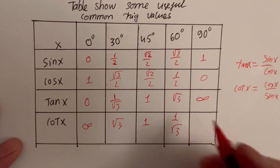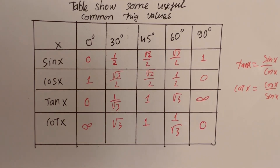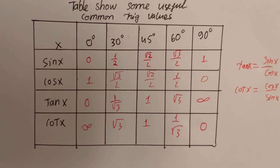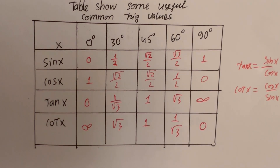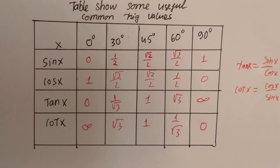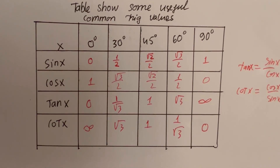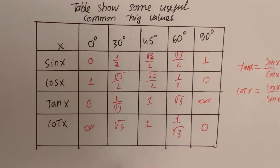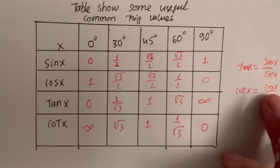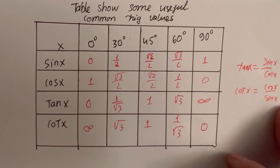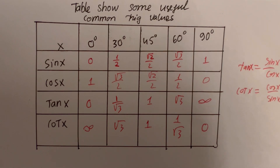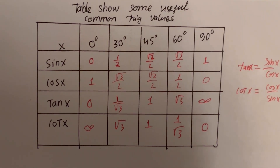So guys, remember the trig table shows useful common trick values at 0°, 30°, 45°, 60°, and 90°. You don't need to remember all of them — just remember sin x, then cos x is the opposite of sin x, and tan x equals sin x over cos x, and cot x equals cos x over sin x. Thank you for watching, hope you understand and remember that. Bye bye!